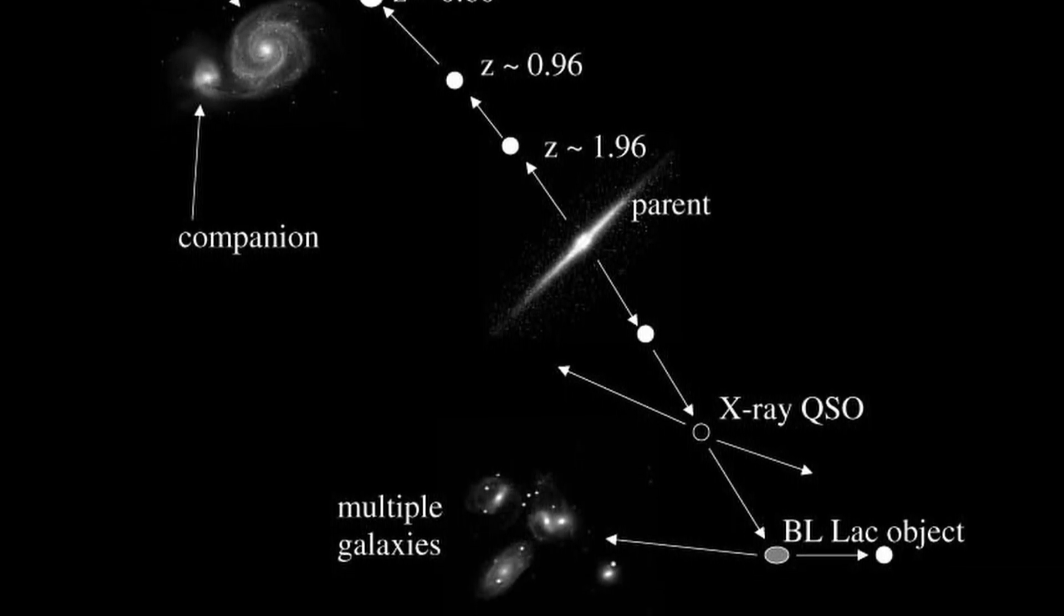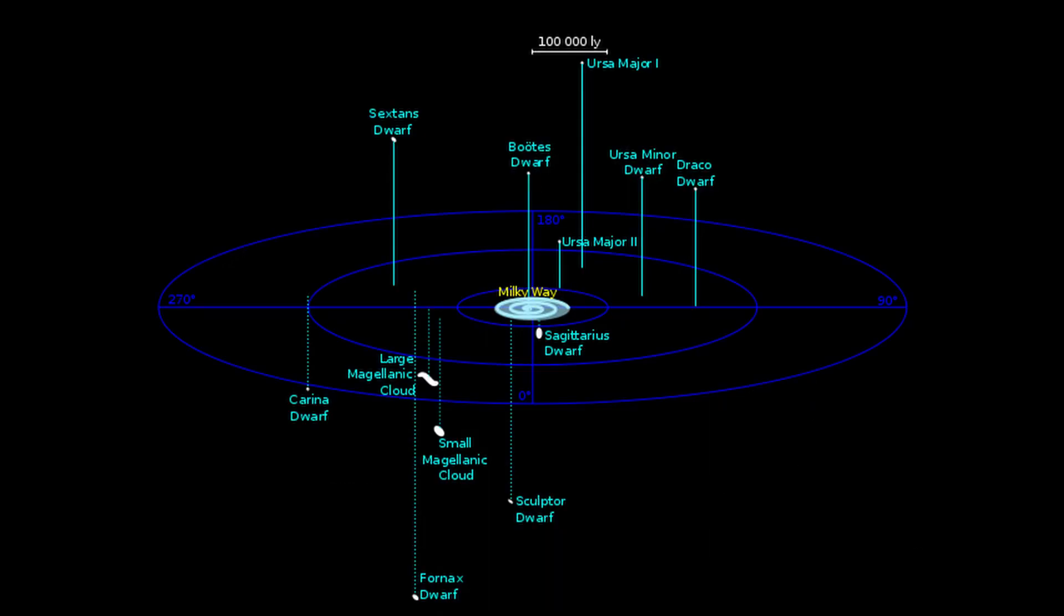We know that our own Milky Way is surrounded by dwarf galaxies. So it is possible that over time these dwarf galaxies re-merge with a host and the process restarts. But this leads back to the question of why we do not see more of these events happening.